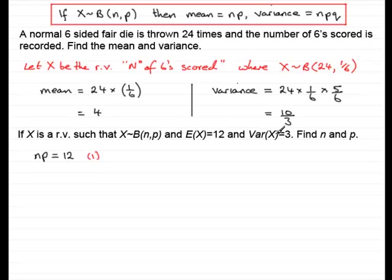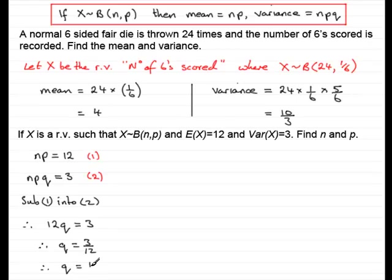Now the other thing is that the variance of X is 3. So that means that npq for the variance must be equal to 3, and we'll call that equation 2. Now what I can do is substitute 1 into 2. So if I just write that down, sub 1 into 2, what we would have is, therefore, 12 for np, 12 times q equals 3. So 12 times q equals 3. So therefore, if we divide both sides by 12, we have q equals 3 twelfths. In other words, q is equal to 1 quarter.